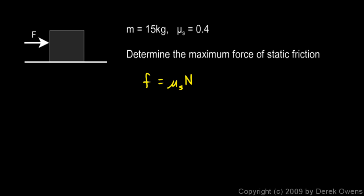So we can solve this problem pretty easily. The maximum force of static friction is just mu sub s times n. But what is n? Well, n is the normal force holding the block up. That's normal, perpendicular to the surface. That's up in this case. And gravity is down.